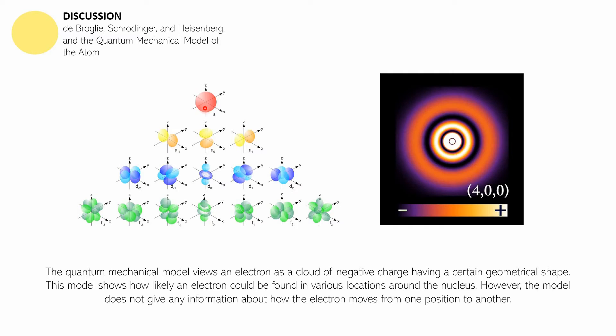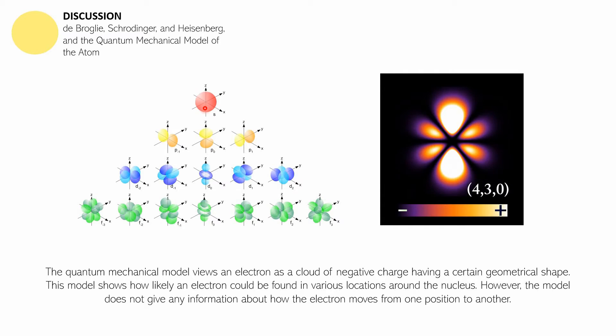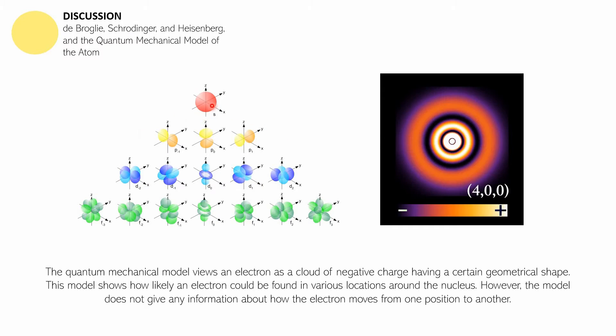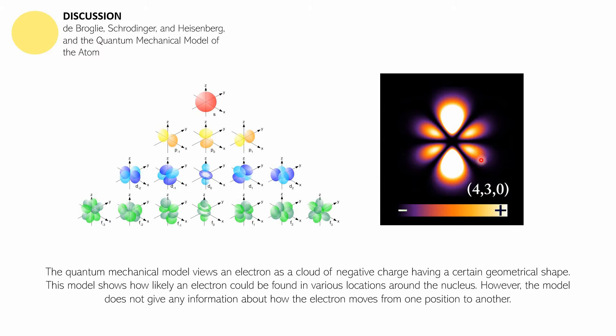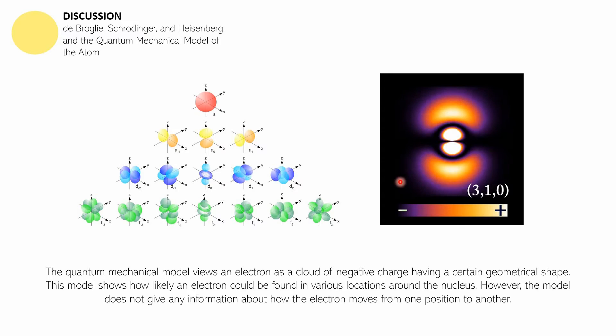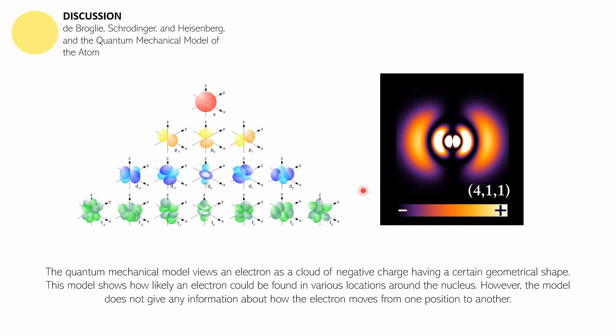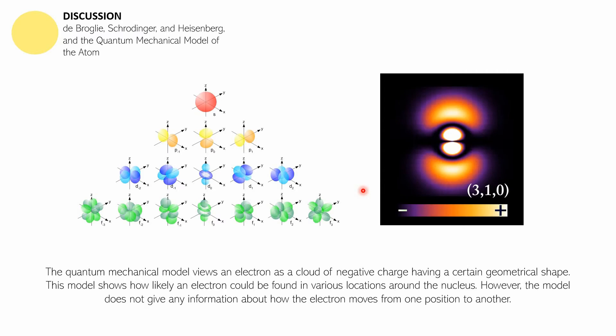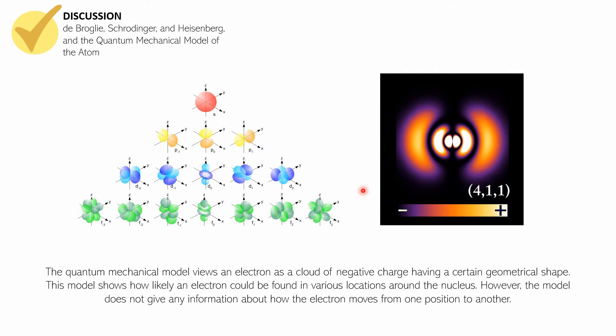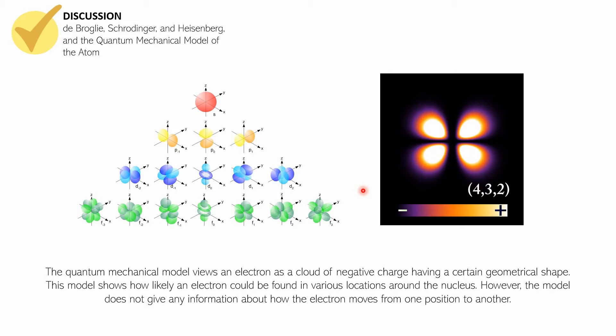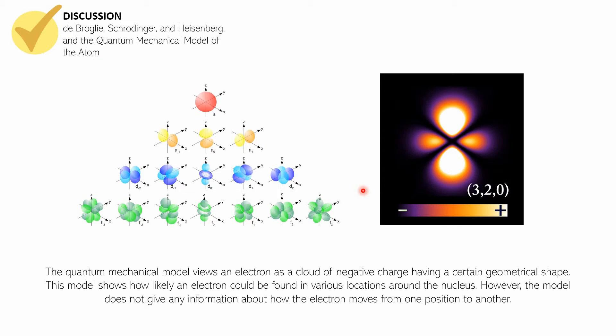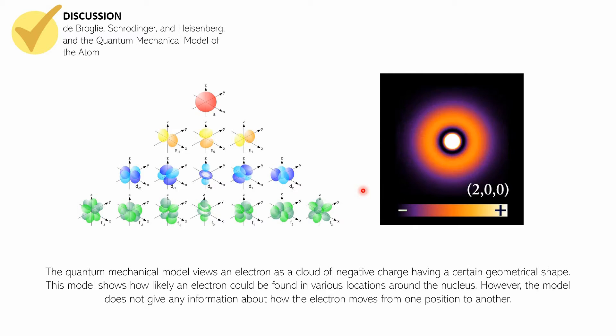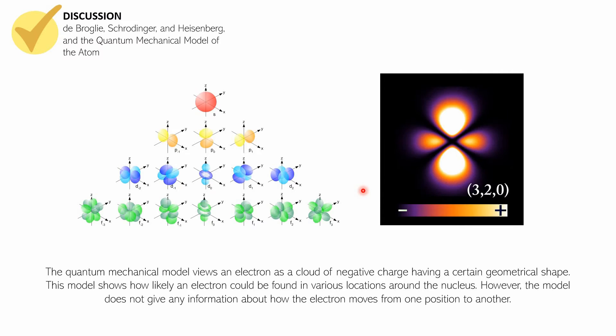This model shows how likely an electron is to be found in various locations around the nucleus. However, the quantum mechanical model or the orbitals being shown here can't really give us information on how the electrons move from one position to another. They can only show their locations but not how they move from one location to another. So that's the first part of the discussion, and I hope that with this we were able to describe that the model of the atom we are using today is called the quantum mechanical model of the atom.